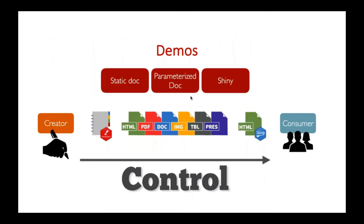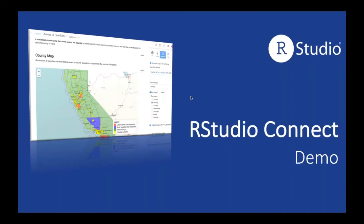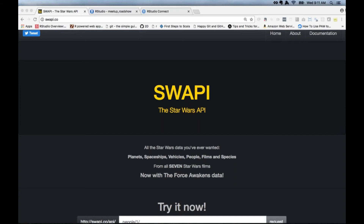My colleague Sean is going to talk about the different types of artifacts: first a static document — a basic R Markdown document — then parameterized documents and how powerful those are, and finally application development and hosting applications so that consumers can take control of them. Let's dive into the demos. Thanks for that introduction, Nathan. What we're going to be talking about today, just as Nathan said, is how to get control over to end users and make your lives as data scientists a bit easier.